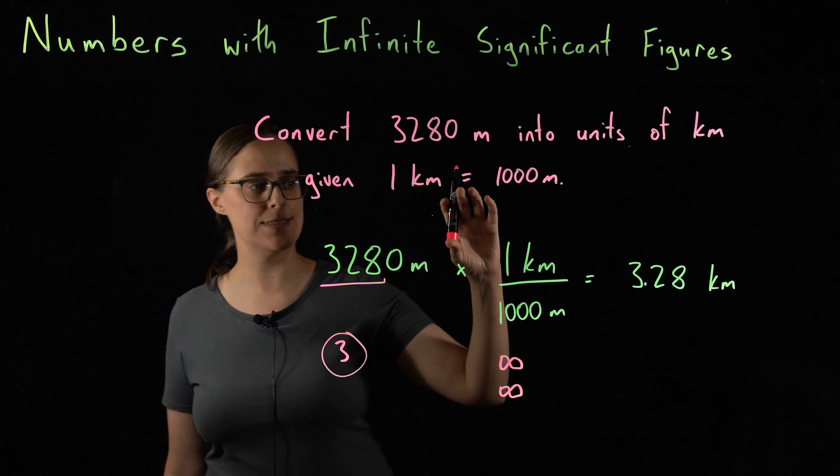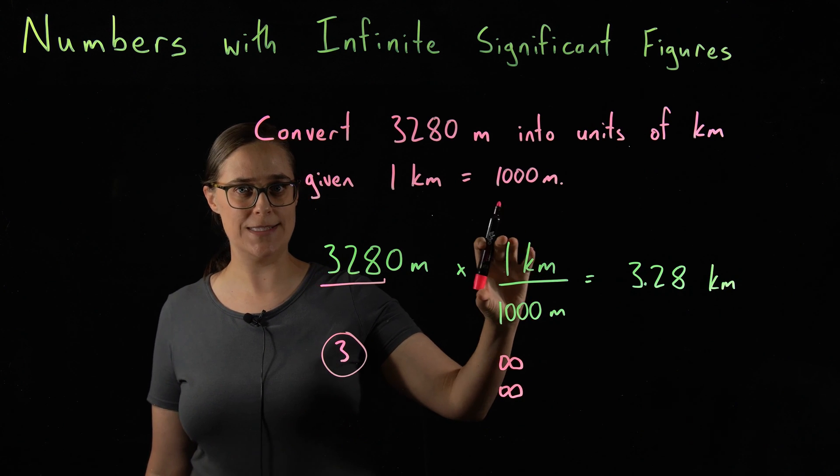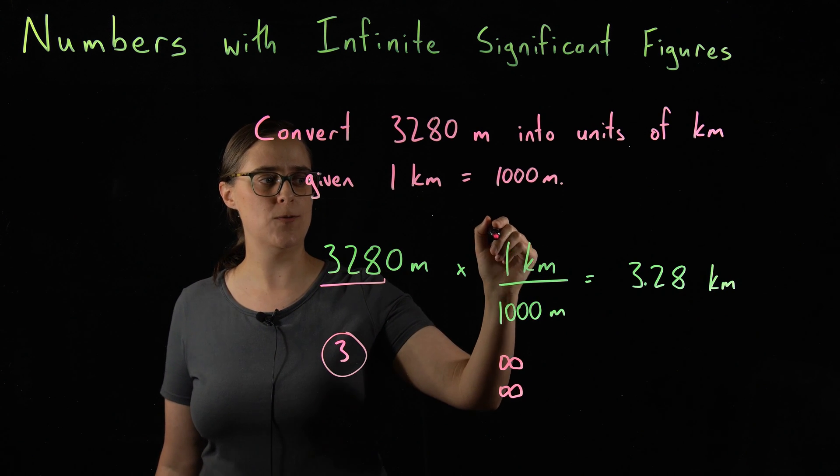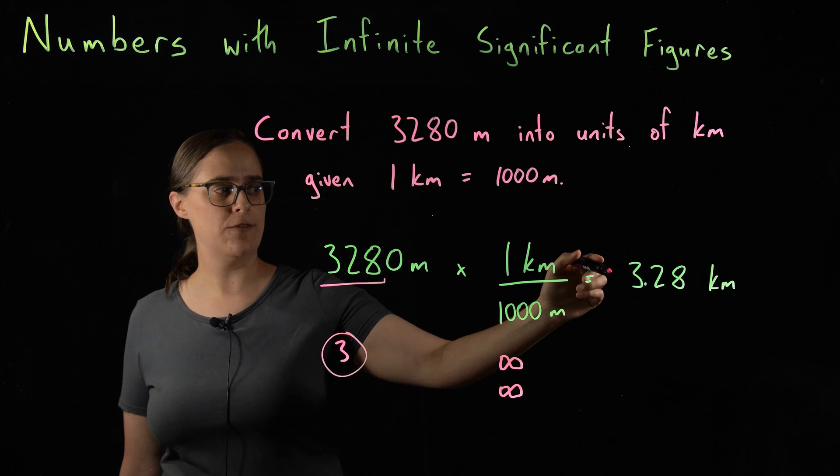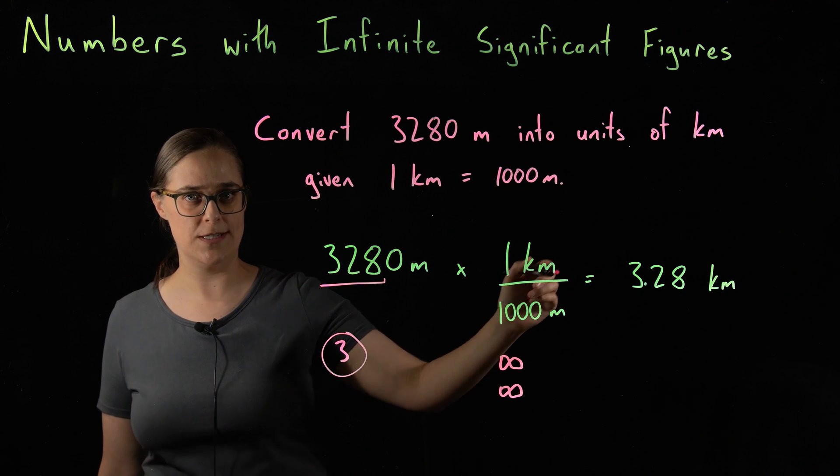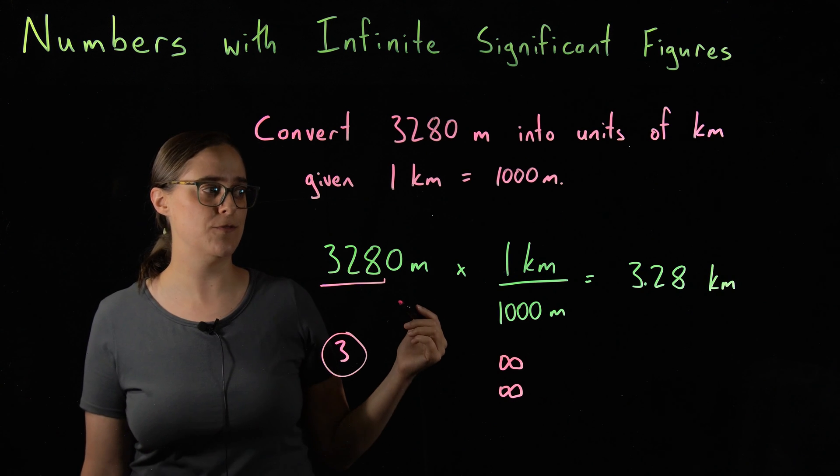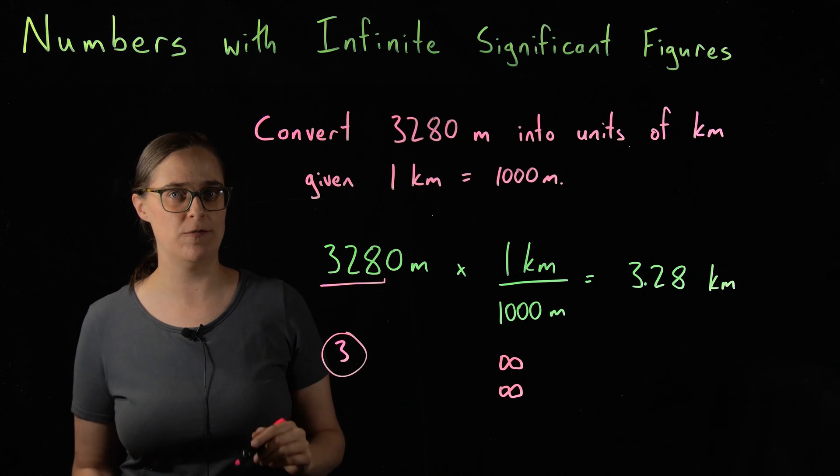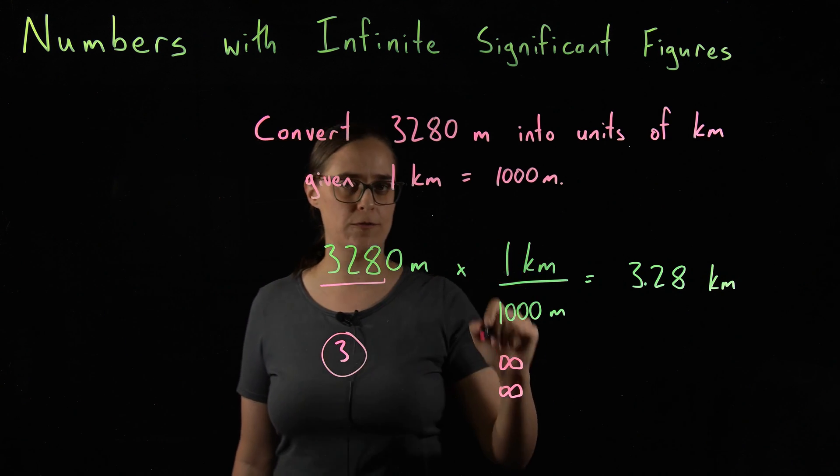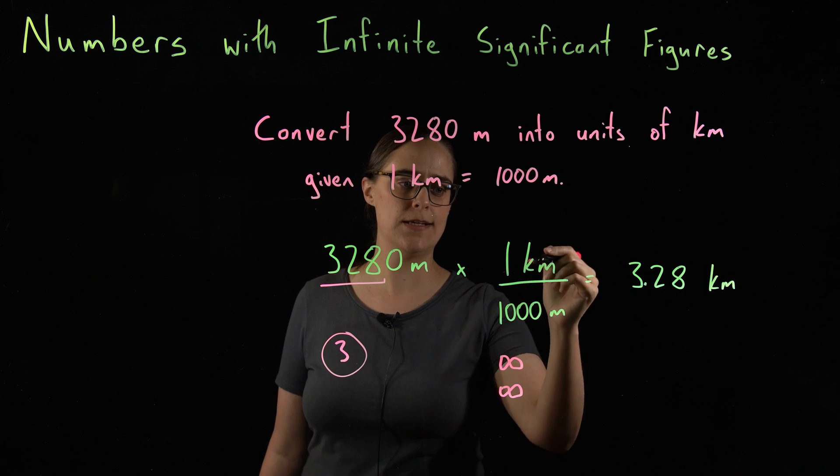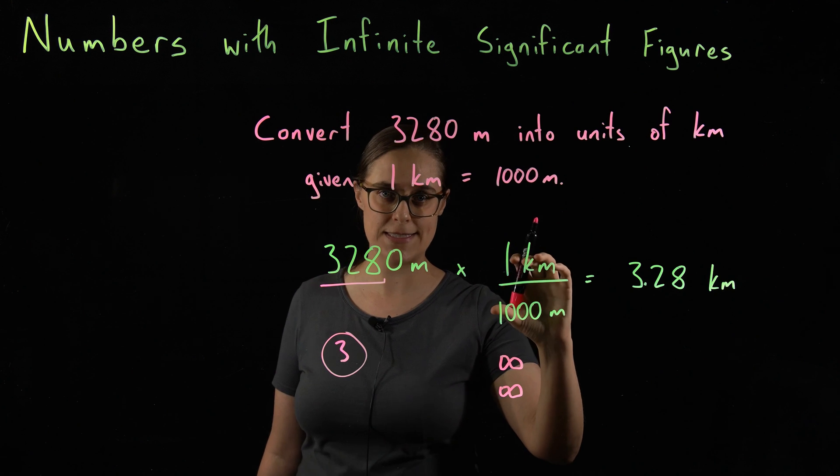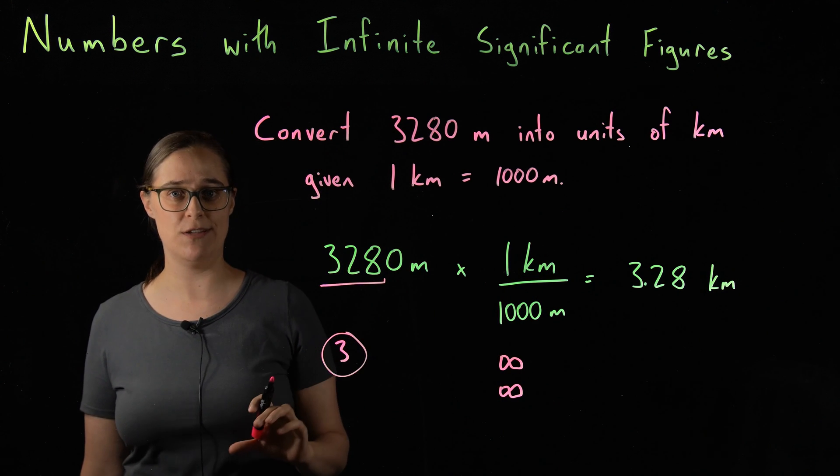If you didn't realize that these two numbers were an exact definition and you assumed they only had one significant figure, you would have rounded this answer to one significant figure. You would have gotten an answer of three kilometers. That would have been wrong. You would have gotten the incorrect answer in a problem like this if you did not realize that this was an exact definition with infinite significant figures.